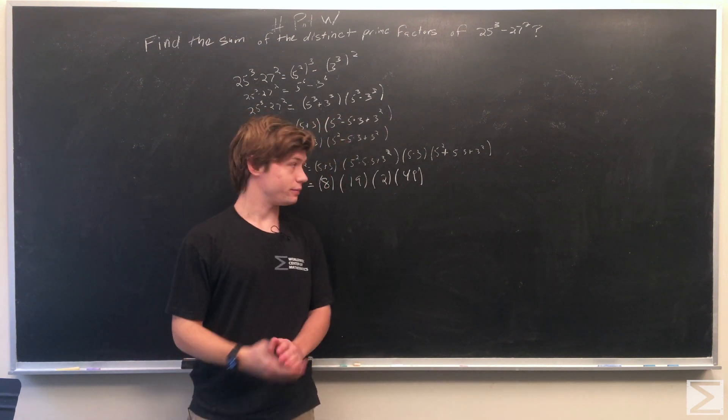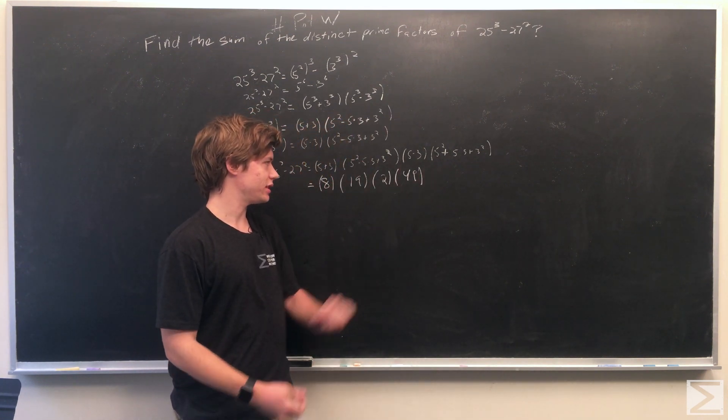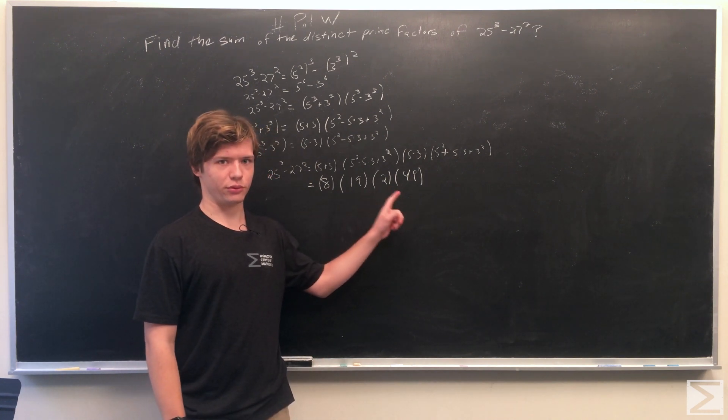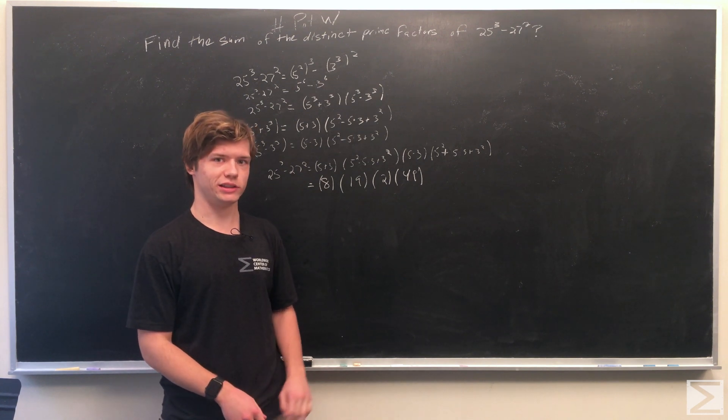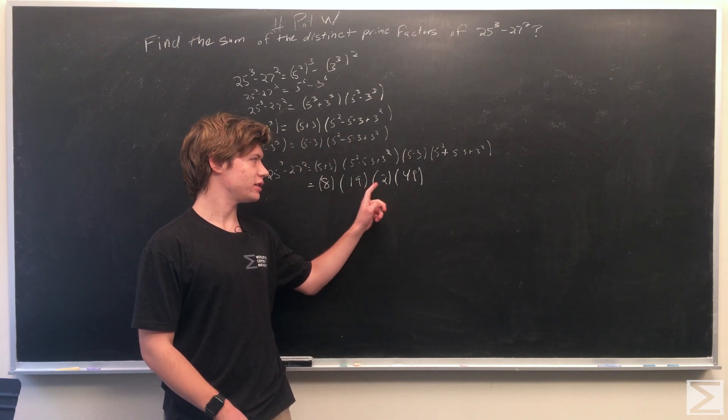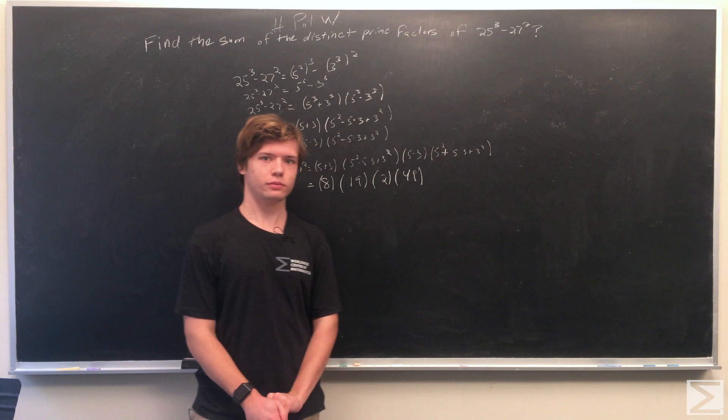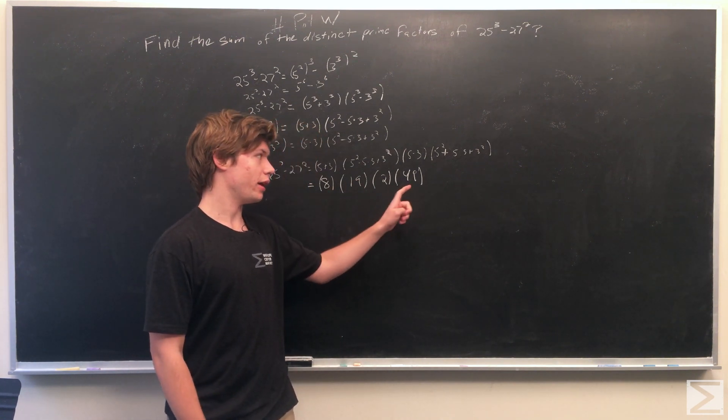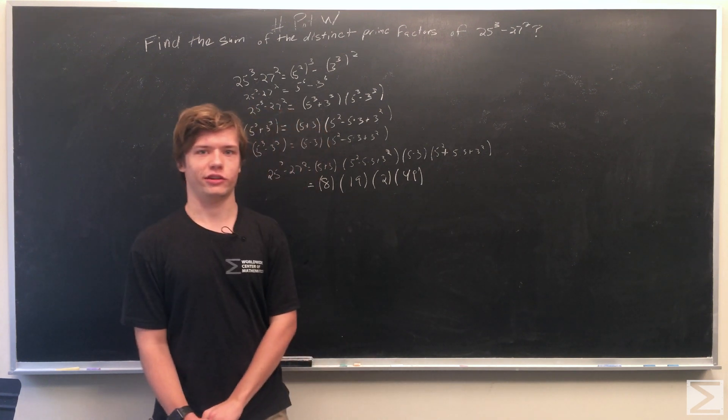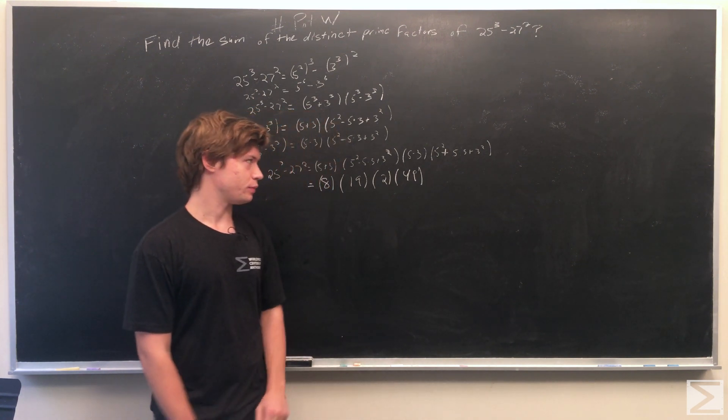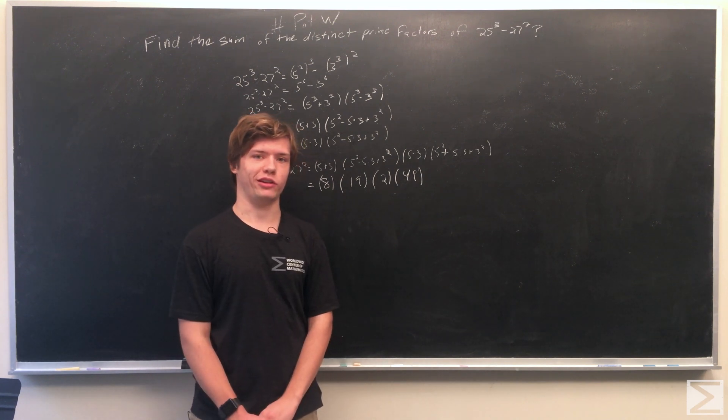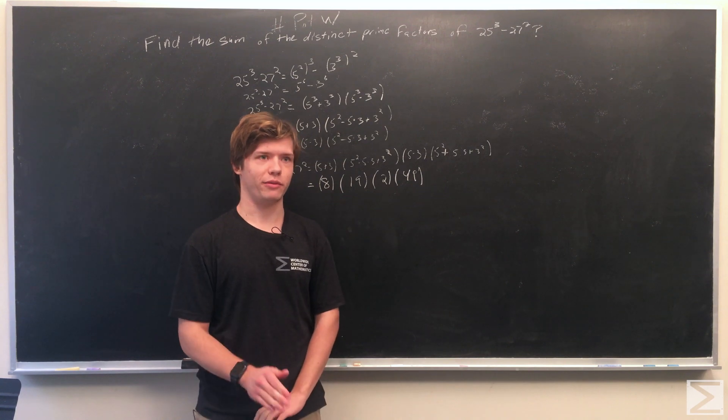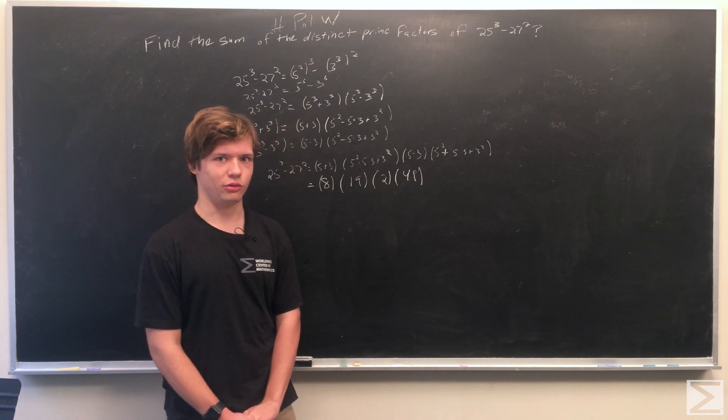Simplifying all these expressions, we have 8 times 19 times 2 times 49. So this is an expression. We already see two prime factors, 19 and 2. And we have two terms that are not prime, 8 and 49. The prime factorization of 8 is 2 cubed. And 49, the prime factorization is 7 squared. So we'll just simplify those into prime factors and see what we come up with.